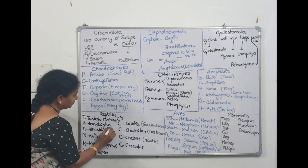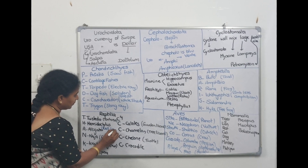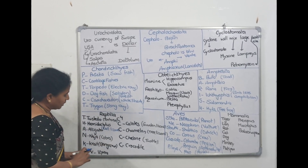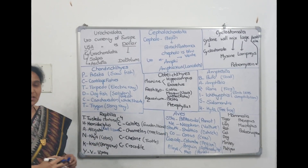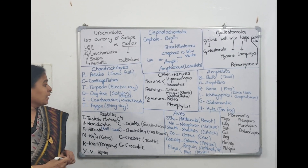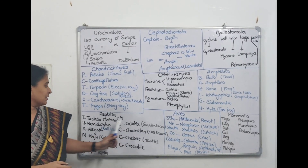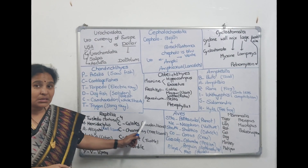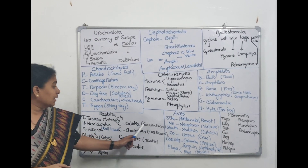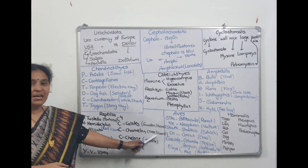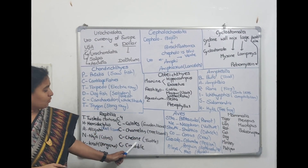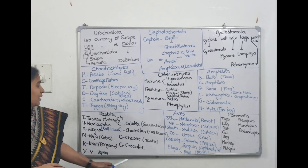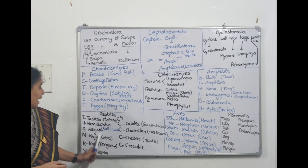Testudo is tortoise. Hemidactylus is a small wall lizard. Alligator is alligator. Naja is cobra. Krait is Bungarus. Vipera is viper. Calotes is garden lizard, Chameleon is tree lizard, Chelone is turtle, and Crocodile is crocodile. So 'Thank You C4' is the code for Reptilia.